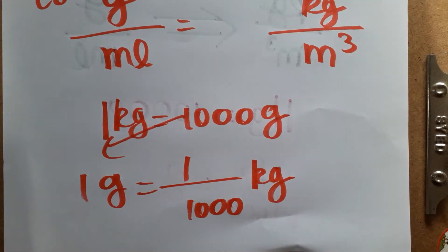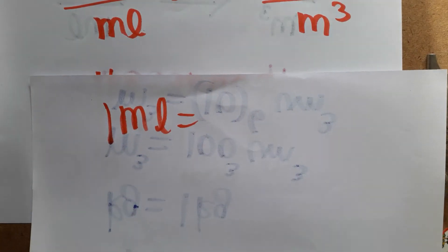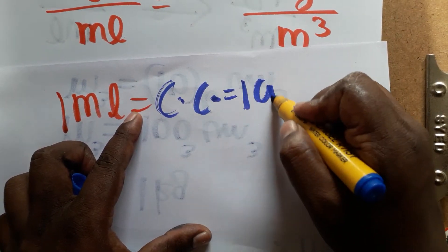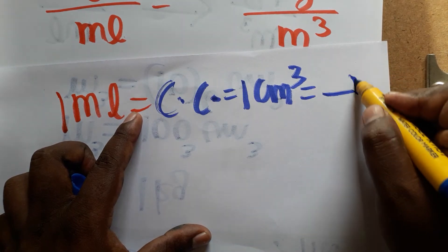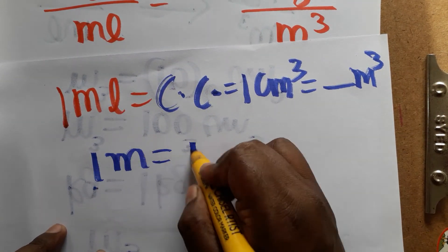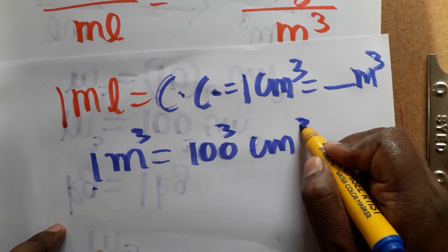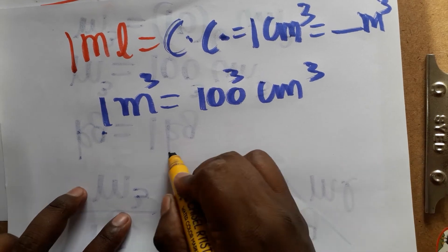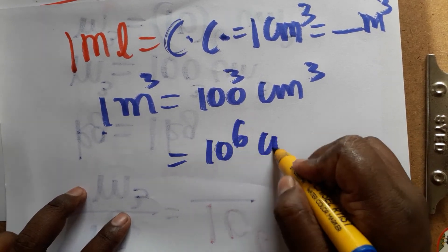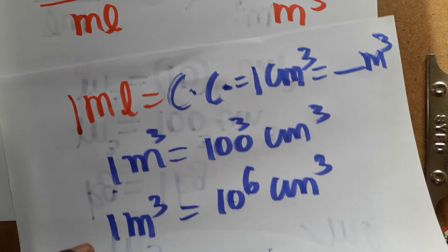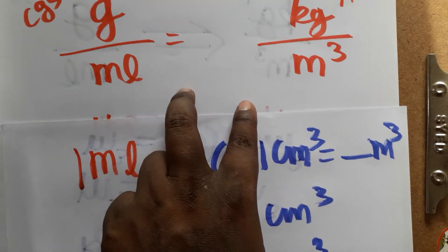Next, mL to meter cube. 1 mL can be taken as 1 centimeter cube — also called 1 cc. Now, 1 meter equals 100 centimeters, so 1 meter cube equals 100 cubed centimeter cube, which is 100 × 100 × 100 = 10 power 6 centimeter cube. So 1 meter cube equals 10⁶ centimeter cube.